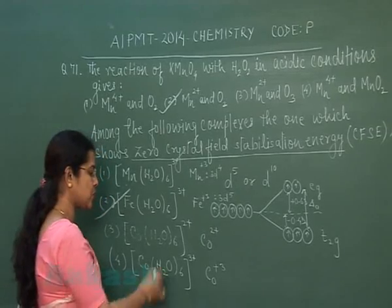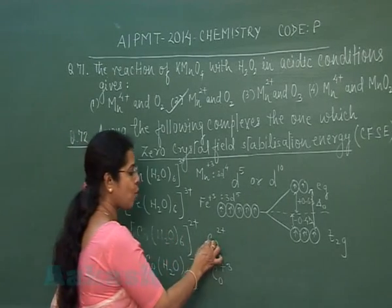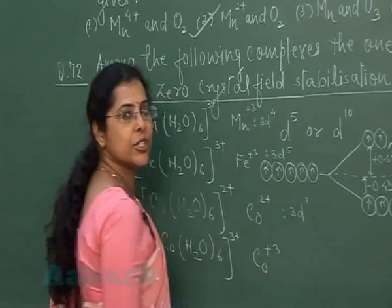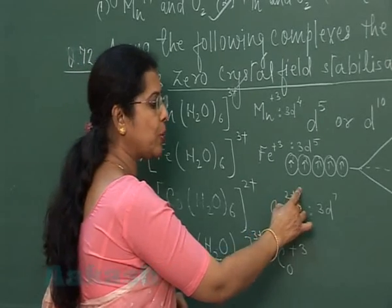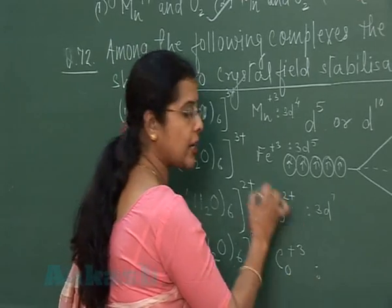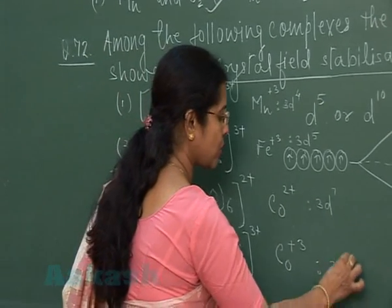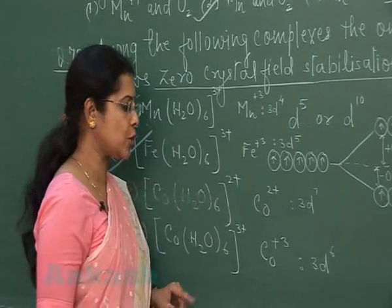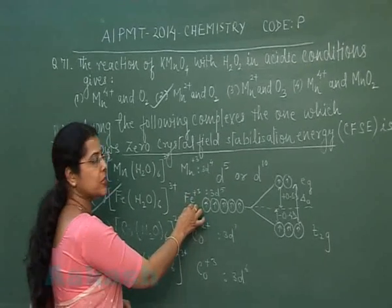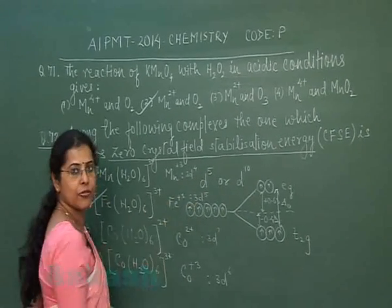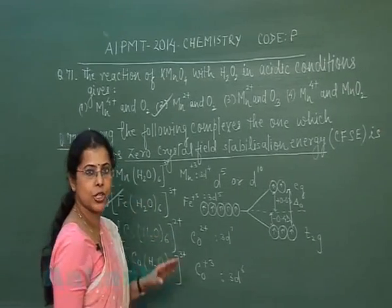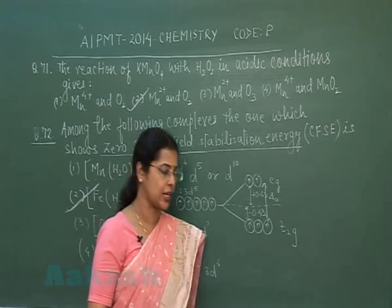Now see in case of the third complex [Co(H2O)6], cobalt's atomic number is 27, its configuration is 3d7 4s2, and Co2+ state configuration is 3d7. Similarly, if it is cobalt in +3 oxidation state, the electronic configuration will be 3d6. So in the given four options, only the ferric complex is having exactly half-filled configuration. So this complex will have zero crystal field stabilization energy, and the correct option is the second option.